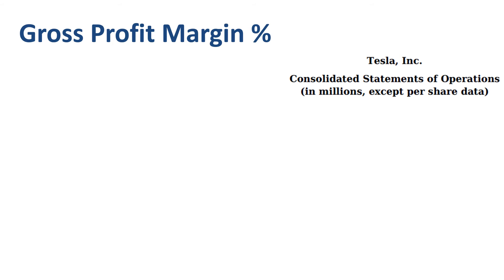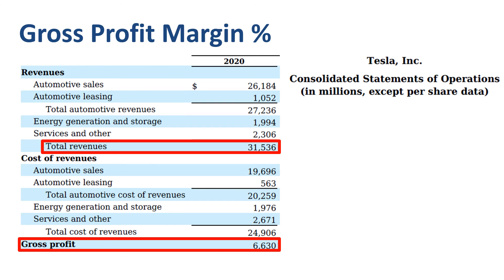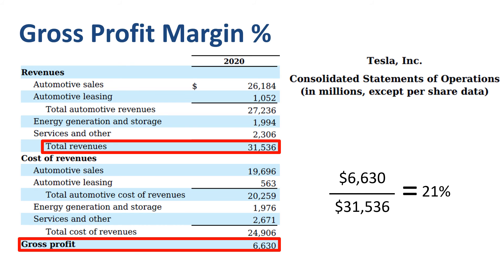One important step to take in financial analysis is to make things relative. What is gross profit as a percentage of revenue — in other words, what is the gross profit margin percentage? You calculate gross profit margin percentage by taking gross profit ($6.6 billion) and dividing it by revenue ($31.5 billion). The answer for Tesla in 2020 is 21% gross profit margin percentage.